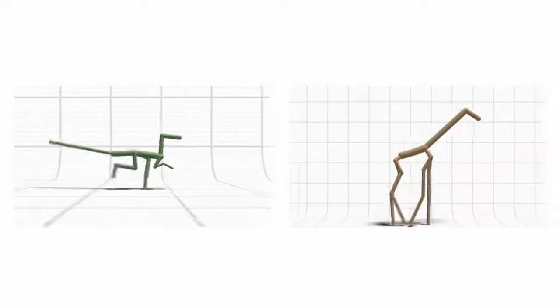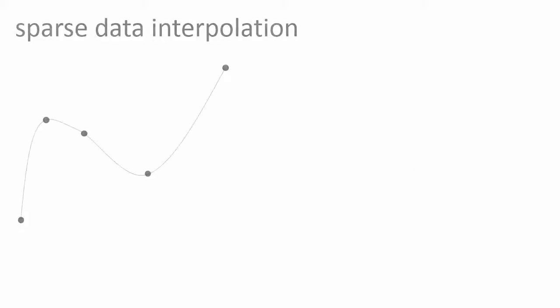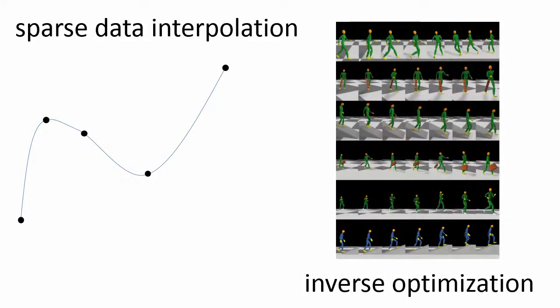We're going to aim to do better by combining two different ideas. The first is sparse data interpolation — essentially looking at animals for which we do know how they move in the real world, and then extrapolating their motions onto a new animal where we don't have video data. And we're going to combine this with an approach known as inverse optimization, which turns out to be very useful in making the sparse data interpolation actually work well.